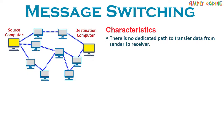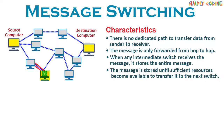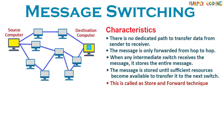In message switching, there is no dedicated path to transfer data from sender to receiver. The message is forwarded from one switch to another switch. When any intermediate switch receives the message, it stores the entire message until sufficient resources become available to transfer it to the next switch. When resources become available, the switch forwards the message to the next switch. This is called the store and forward technique.